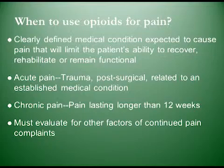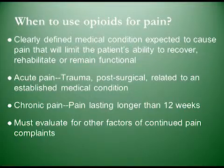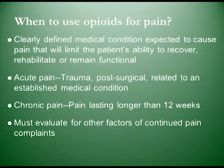There are several types of pain. Acute pain is perhaps the easiest one to justify the use of opioids. These are situations where a patient has pain related to some recent event, particularly a trauma, surgery, or related to an established medical condition that's flared up such as kidney stones or gout. It's reasonable to treat these patients for pain and hope that the pain will get better as they recover from their illness.